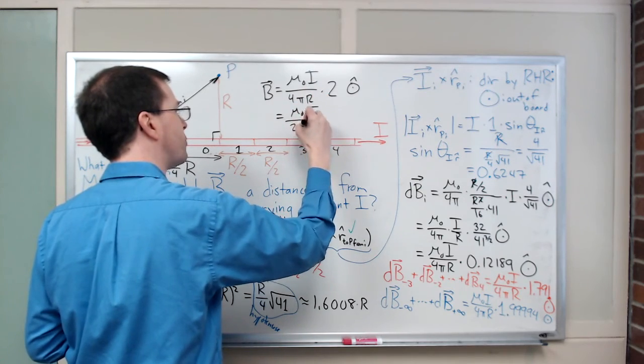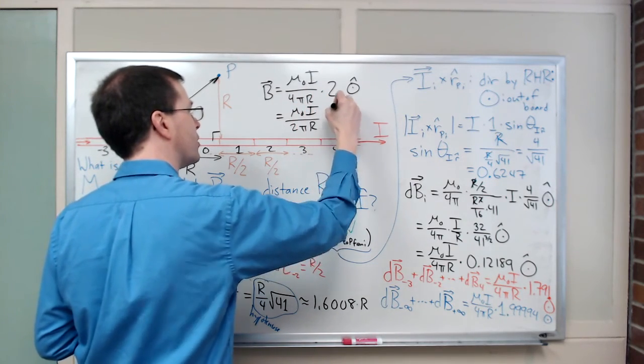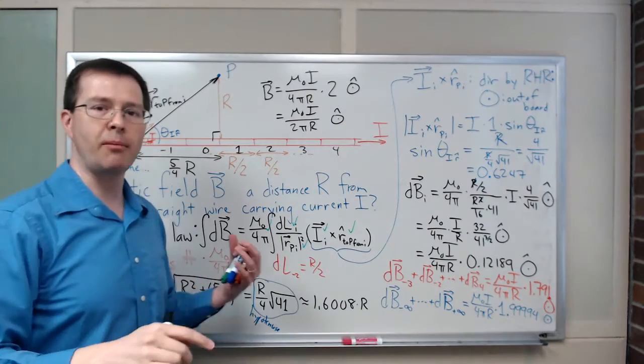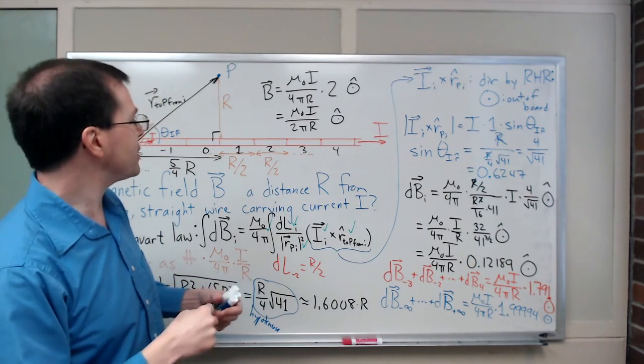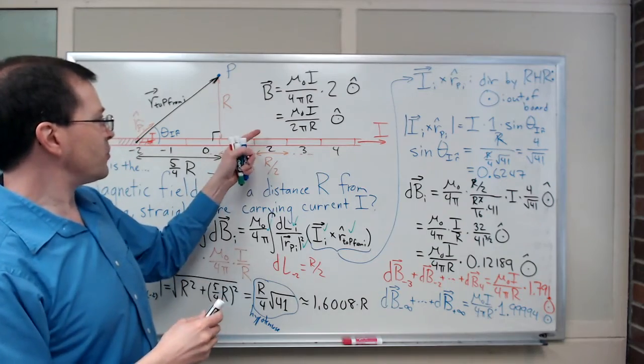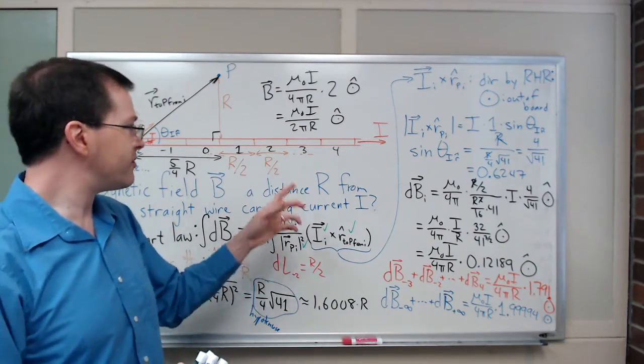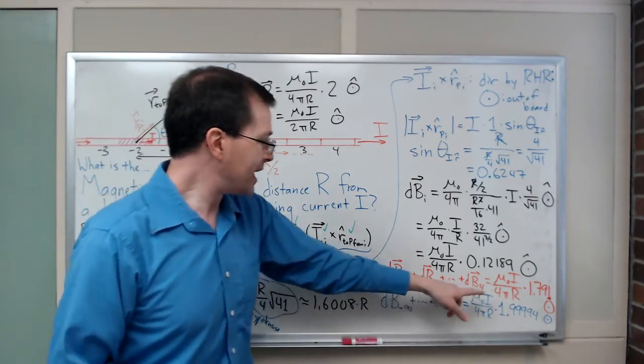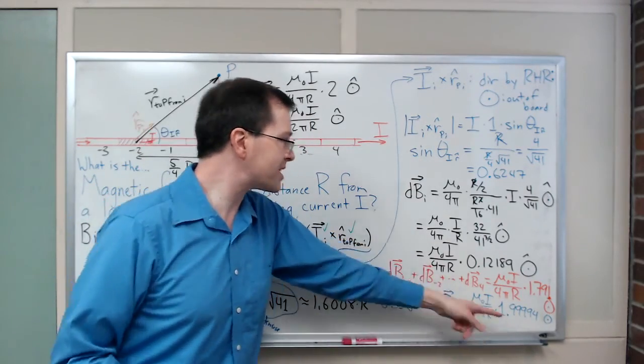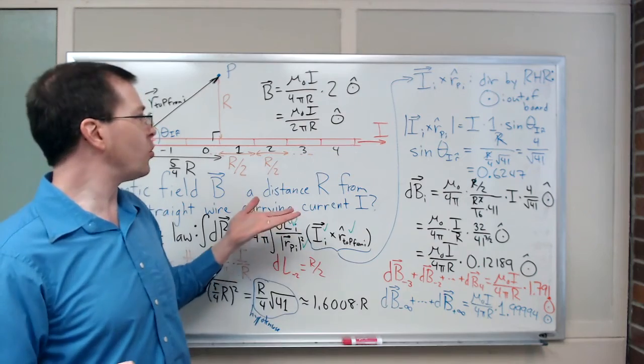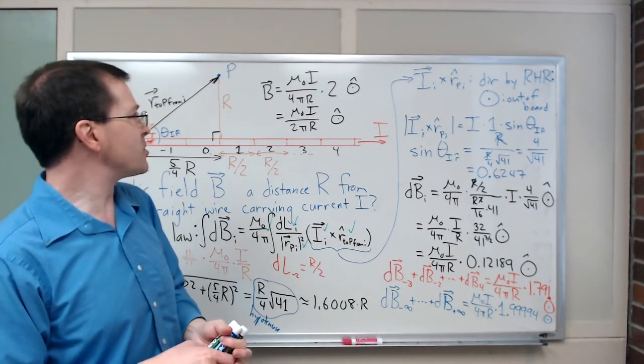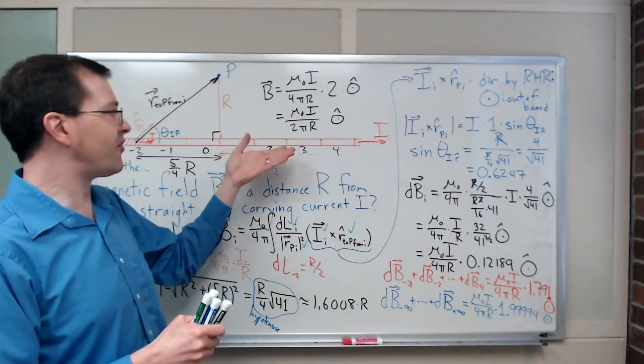So mu naught I over 4 pi R times 2 out of the board, or in other words, mu naught I over 2 pi R out of the board. That's the magnetic field you'll come up with. And it's kind of satisfying that our summing up of individual little pieces can add up and get something so close to the true integrated continuous result. It's pretty cool, and that's what we come up with.